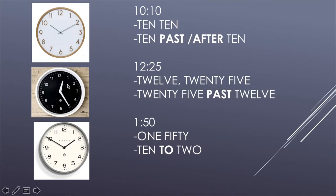Por ejemplo la siguiente hora: el palito pequeño nos marca que son las 12, aún no ha llegado al 1. Los minutos: 5, 10, 15, 20, 25 minutos — entonces serían las 12:25. En inglés: 12:25. Y en la forma un poquito más complicada tendríamos que decir al revés: 25 pasado las 12, eso sería "25 past 12" — también podría ser "25 after 12", es lo mismo.